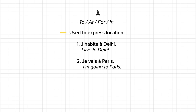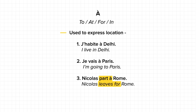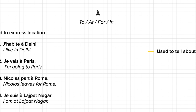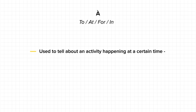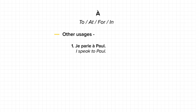Similarly, if I would like to say that someone is leaving for a particular place, I would say, for example, 'Nicolas part à Rome' — 'Nicolas leaves for Rome'. Here the verb 'partir' is used as 'to leave for'. Please remember that 'partir' can be used when talking about leaving from a location and leaving for a location. Then, if you want to say that you are at a certain location, you can say 'Je suis à Lajpatnagar' — 'I am at Lajpatnagar'. It is also used to tell about an activity happening at a certain time: 'Je mange à 14h' — 'I eat at 2pm'. And there are a few other usages, like 'Je parle à Paul' — 'I speak to Paul'.